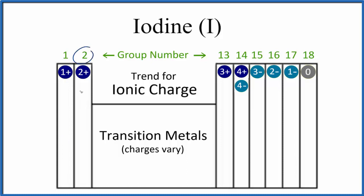Group two, these elements will be two plus. We skip the transition metals, their charges can vary. We have three plus, four plus, three minus, and so on.